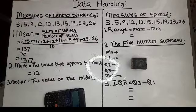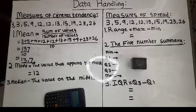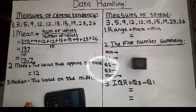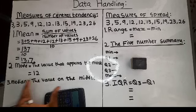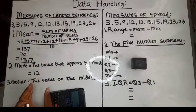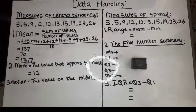Some important notes on the mode: if you have a sequence where, for example, there are three 3s and three 12s — two numbers repeating themselves equally — we do not have a mode. You must write 'no mode.' Do not write zero, because zero is a number and your answer will be incorrect. If two numbers repeat themselves equally, write 'no mode.'